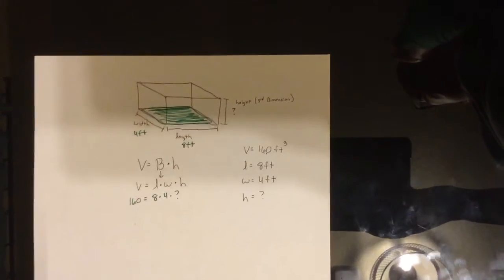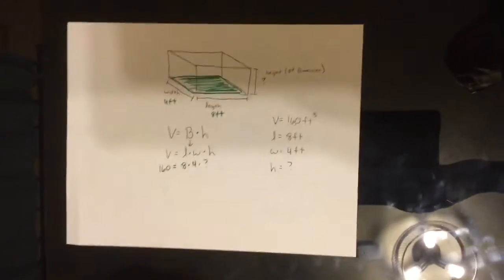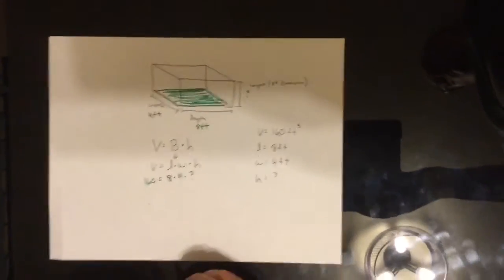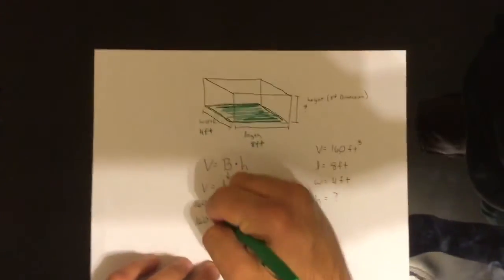Alright so there's an extra step on this one. It's not too bad. The first thing we're going to do is we're going to do 8 times 4. Can anyone tell me what 8 times 4 is? Thirty-two. That is correct. It is 32.